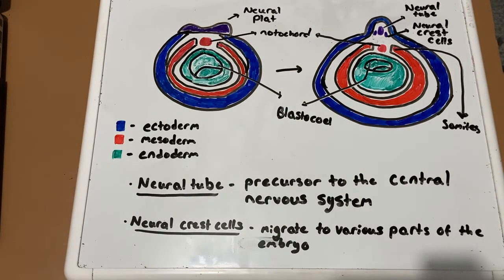And the neural tube is the precursor to the central nervous system, which is the brain and the spinal cord, and it runs along the anterior-posterior axis of the embryo.